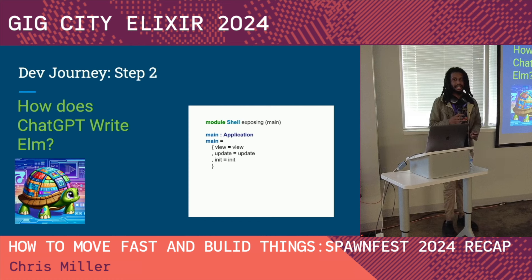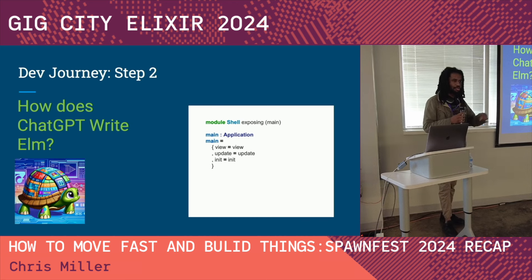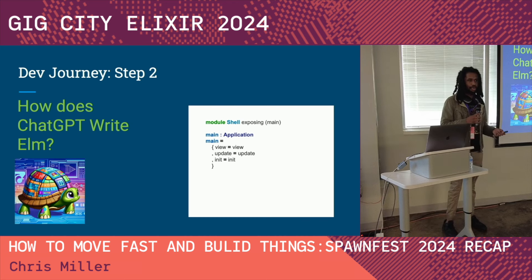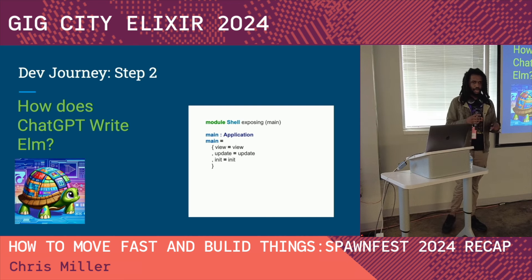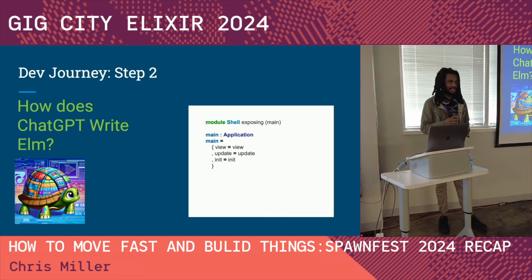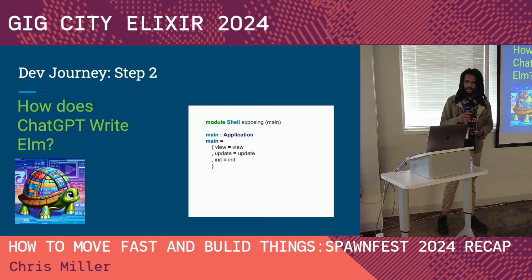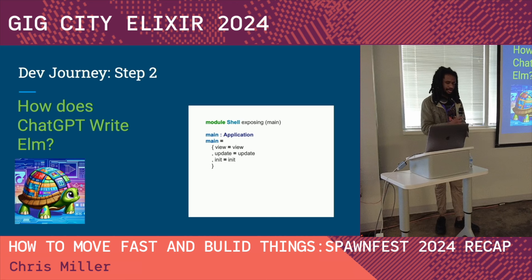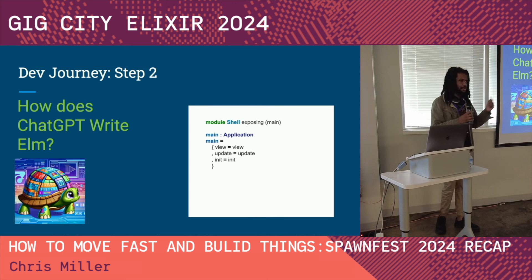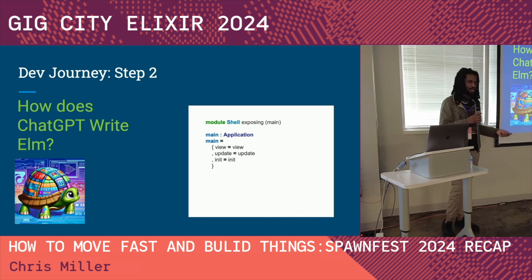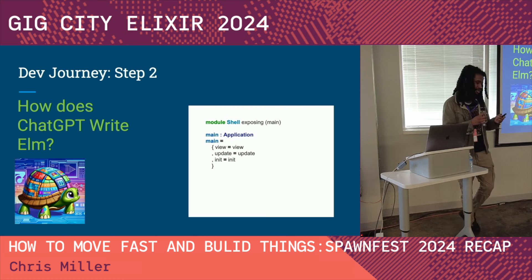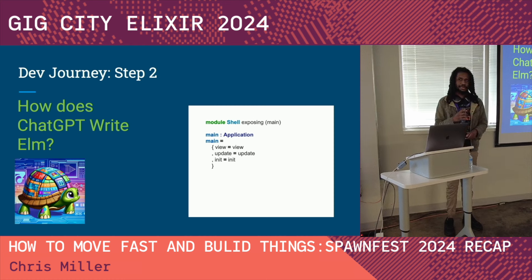We started thinking about what Elm code actually is. In Elm, you have the notion of an Elm program, and to get one you need three things: a function that defines the view — what you actually see; a function that defines init — the initial state of your program; and a function that defines update — when some event happens, how do you want to change the state? Once you have those three functions you essentially have an Elm program that compiles to a web app.